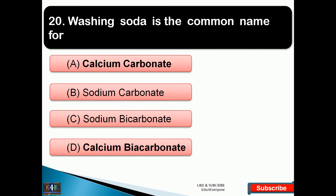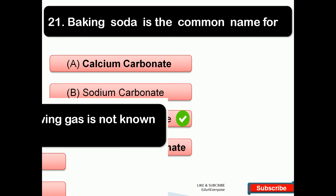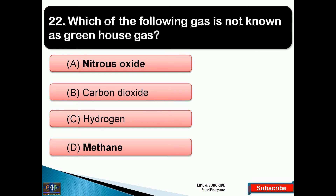Washing soda is the common name for — the right answer is option B, that is sodium carbonate. Baking soda is the common name for — the right answer is option C, that is sodium bicarbonate. Which of the following gases is not known as a greenhouse gas? Nitrous oxide, carbon dioxide, and methane are all greenhouse gases.